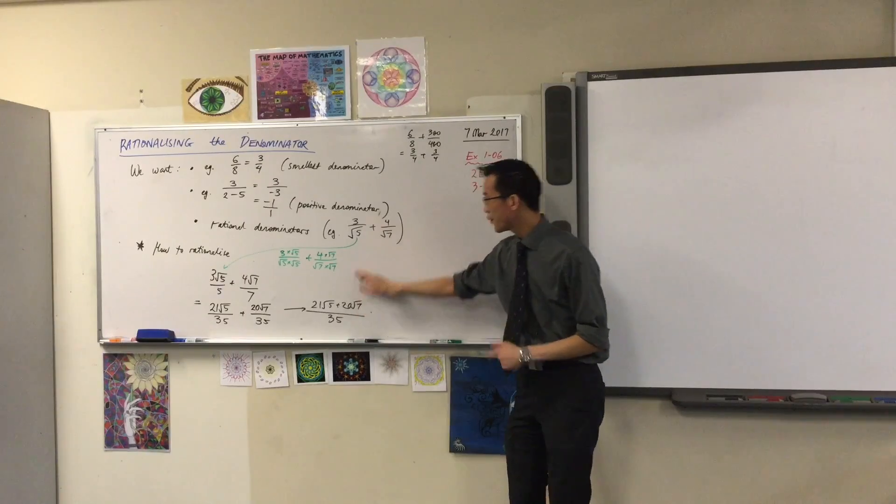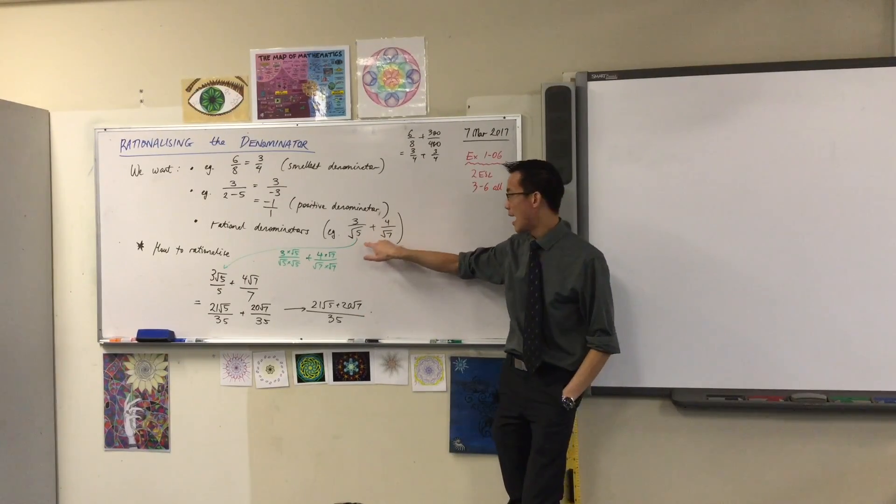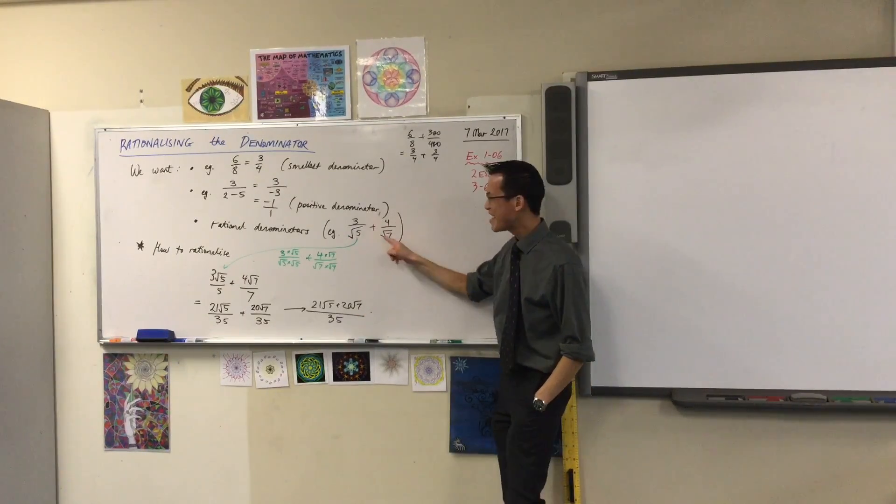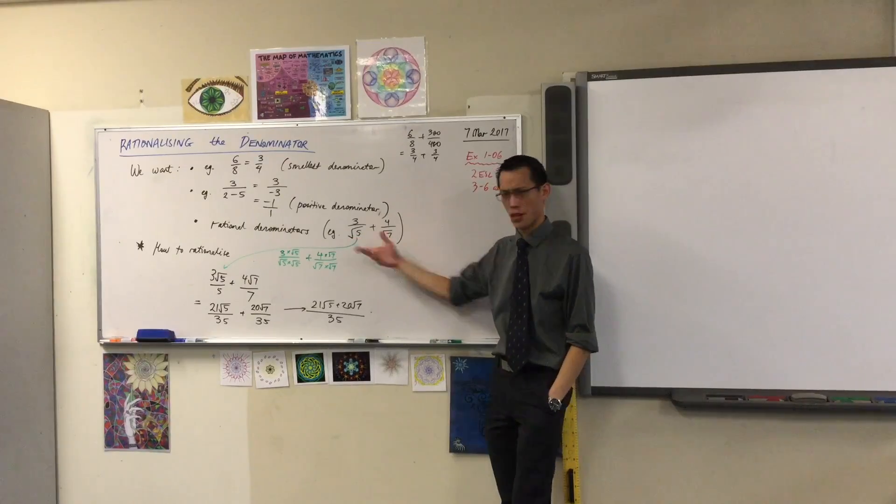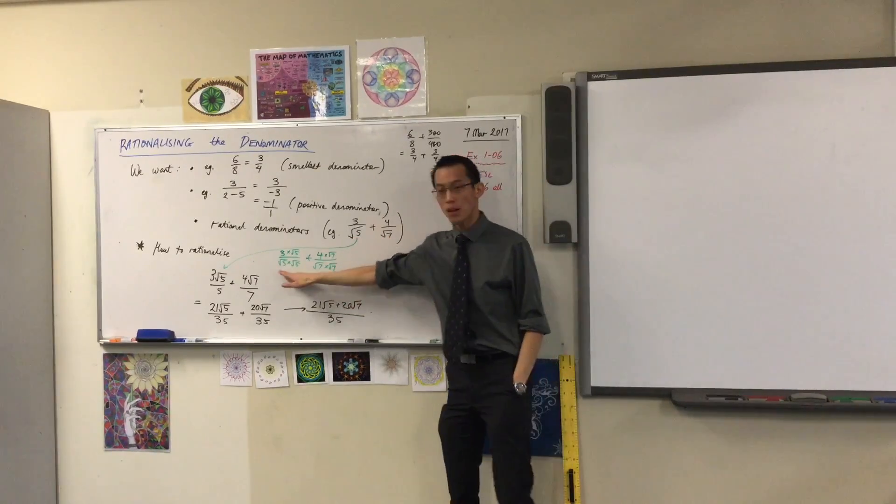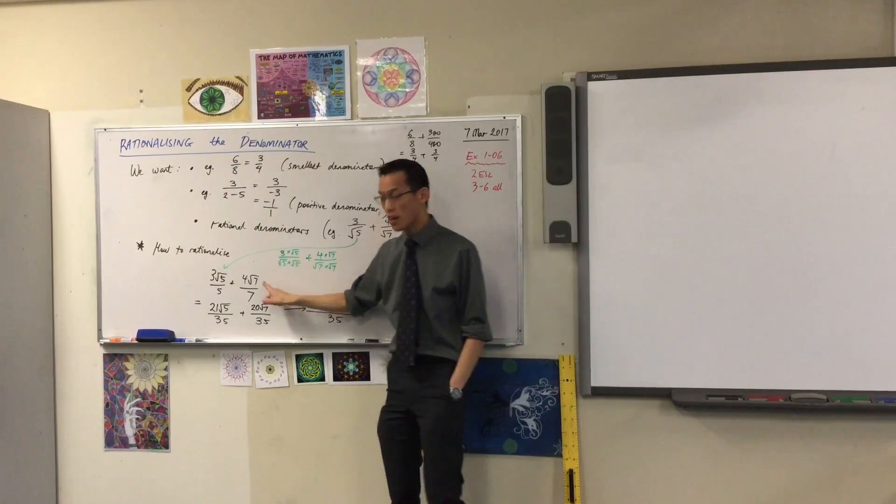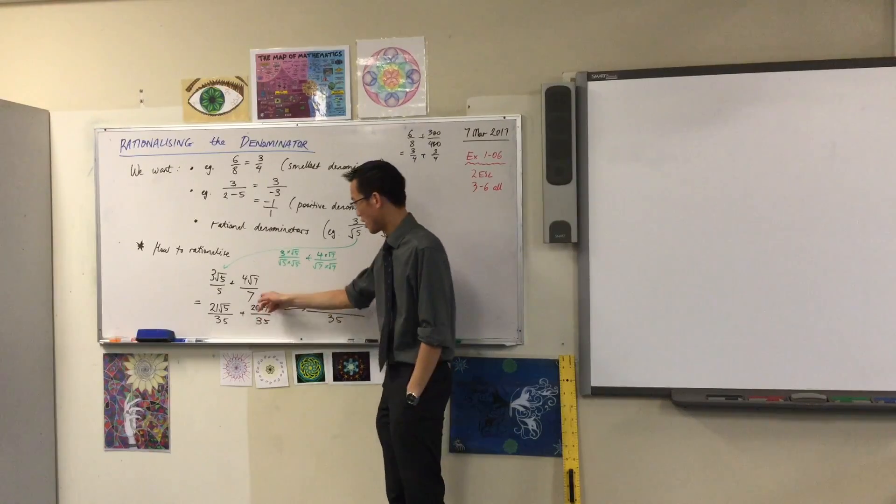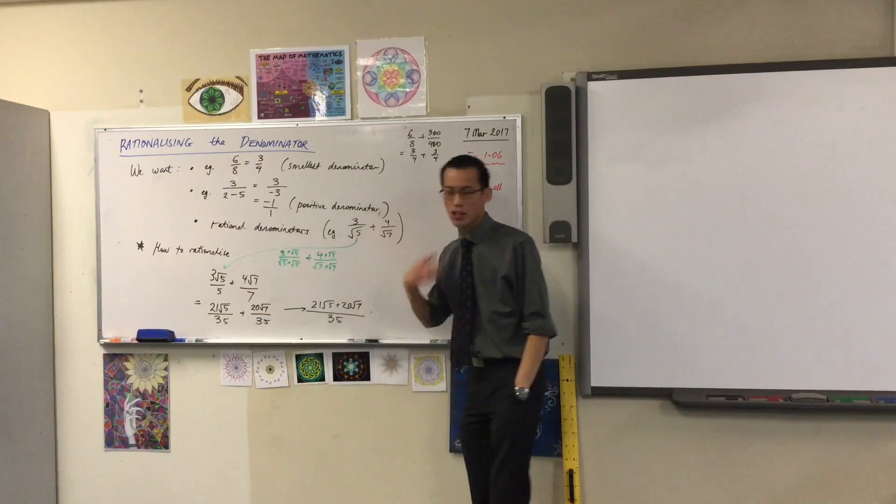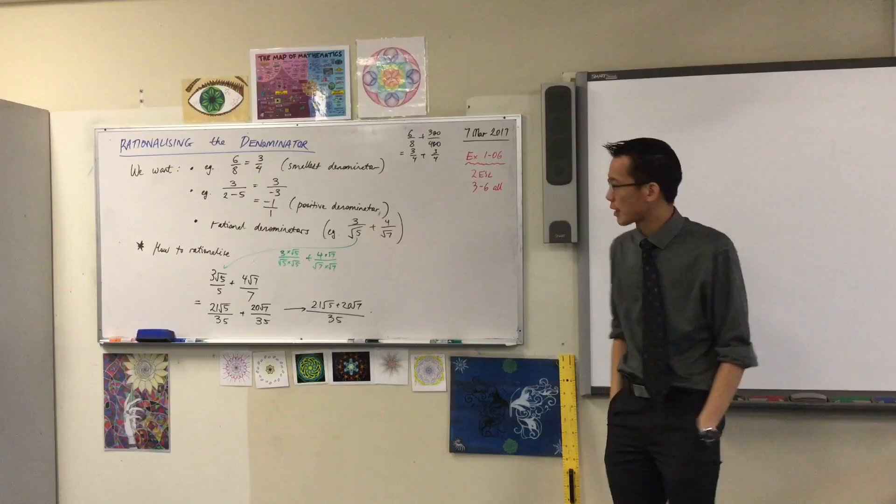But let's just review. If you get given a pair of fractions and one or both of them have irrational denominators, surds, then if you just multiply by the right surd, you'll turn them into rational denominators. Generally you want whole numbers, and then you can do whatever you want with that fraction. You can combine them and so on.